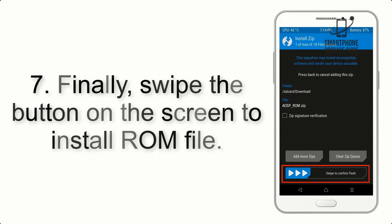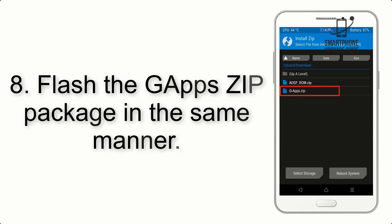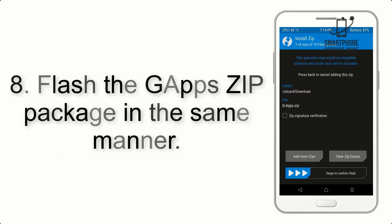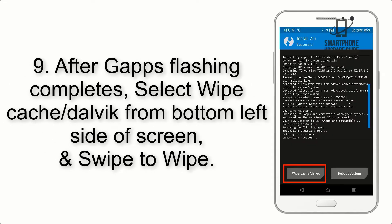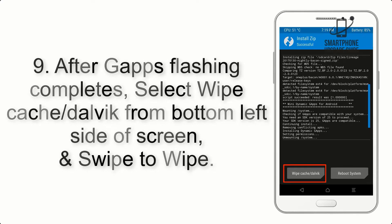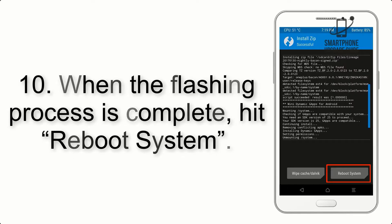Step 7: Swipe the button on screen to install the ROM file. Step 8: Flash the GApps zip package in the same manner. Step 9: After GApps flashing completes, select Wipe Cache and Dalvik from the bottom left side of the screen and swipe to wipe.